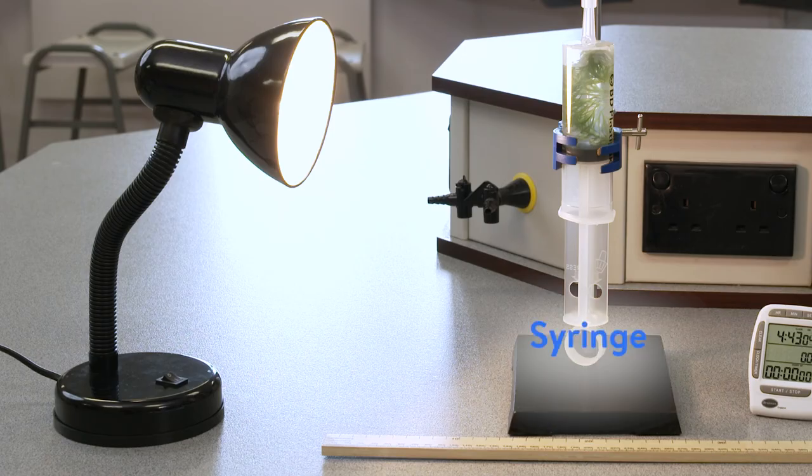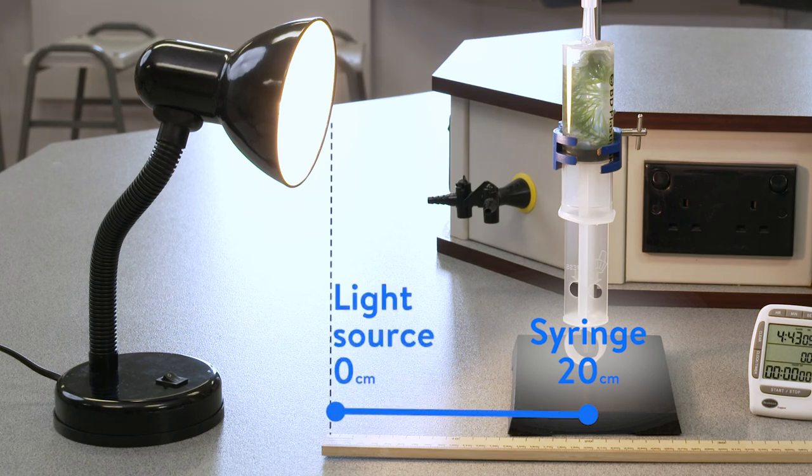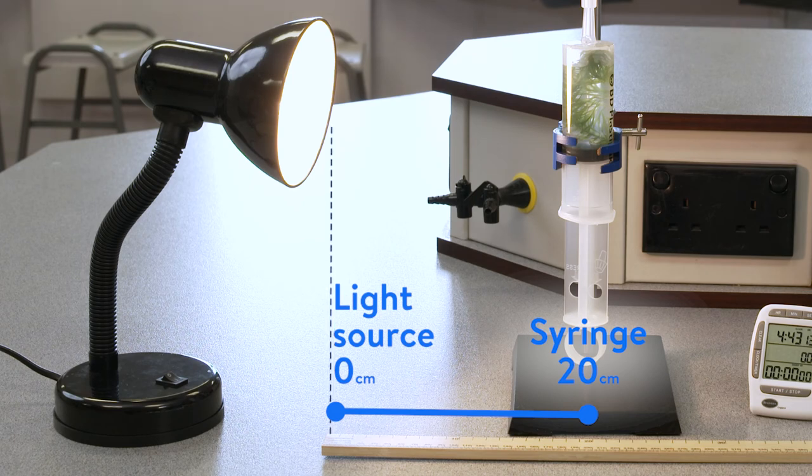Place the syringe setup at the 20 centimeter point of the ruler and place the light source at the 0 centimeter point of the ruler. Allow the equipment to acclimatize to the light.